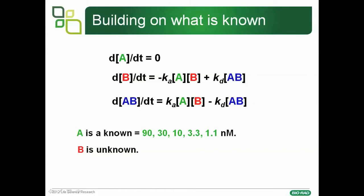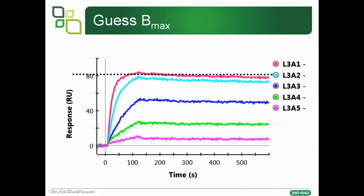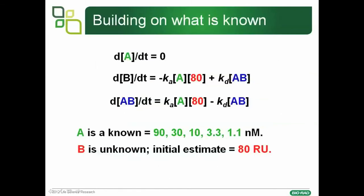Putting into our equations what we know and what we don't know: because the amount of analyte is constant, as it's depleted at the surface it's replaced by that from bulk solution, so the change in the concentration of A with time is zero. The change in concentration of B with time, and similarly the change in concentration of the complex AB, are given by the equations shown. One of the first things the software does is take a guess at Bmax by looking at Rmax. In the sensorgram shown, you can see that the surface response seems to saturate at around 80 RUs, so the software feeds that in as the initial estimate.